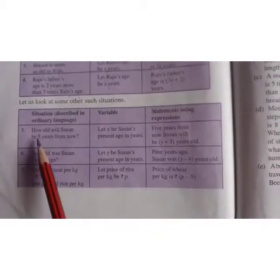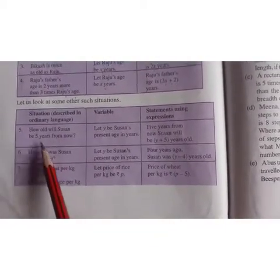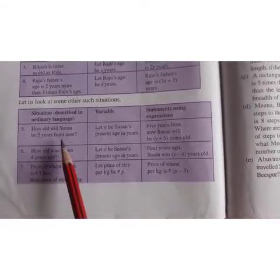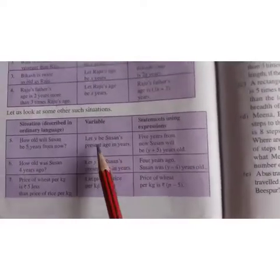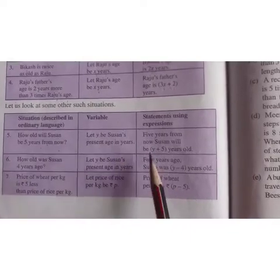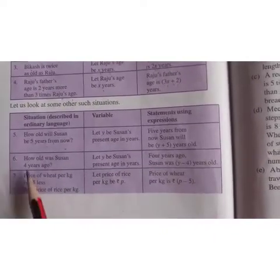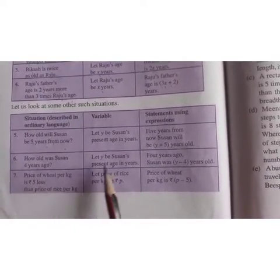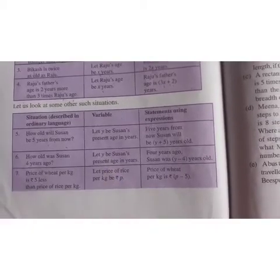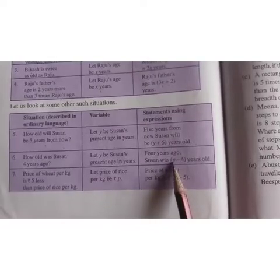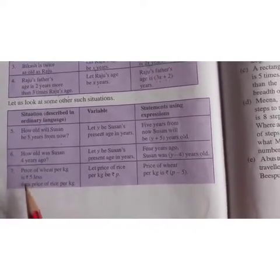Similarly, we have some other expressions here. How old will Susan be 5 years from now? Present age, that is now, let we will take her age as Y years. So after 5 years it will be Y plus 5. How old was Susan 4 years ago? So present age we will be taking is Y. 4 years ago means before, so it will be minus, so you will write it as Y minus 4.